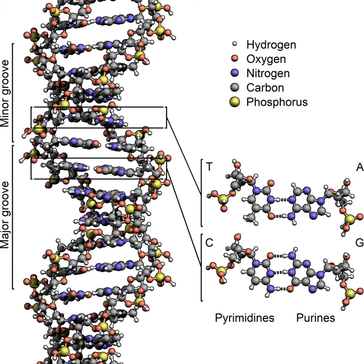The DNA double helix is held together by hydrogen bonds between the bases attached to the two strands. The four bases found in DNA are adenine, abbreviated A, cytosine, C, guanine, G, and thymine, T. These four bases are attached to the sugar phosphate groups to form the complete nucleotide.